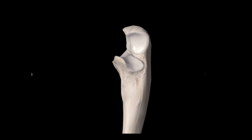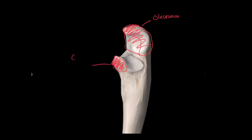Zooming into the proximal end of the ulna, the first things that catch my eye are two projections. This larger one is going to be called the olecranon of the ulna. When the elbow joint extends, the olecranon of the ulna goes into the olecranon fossa of the humerus. This smaller projection is going to be called the coronoid process — process means something that sticks out. The coronoid process goes into the coronoid fossa of the humerus. Coronoid means beak-like.